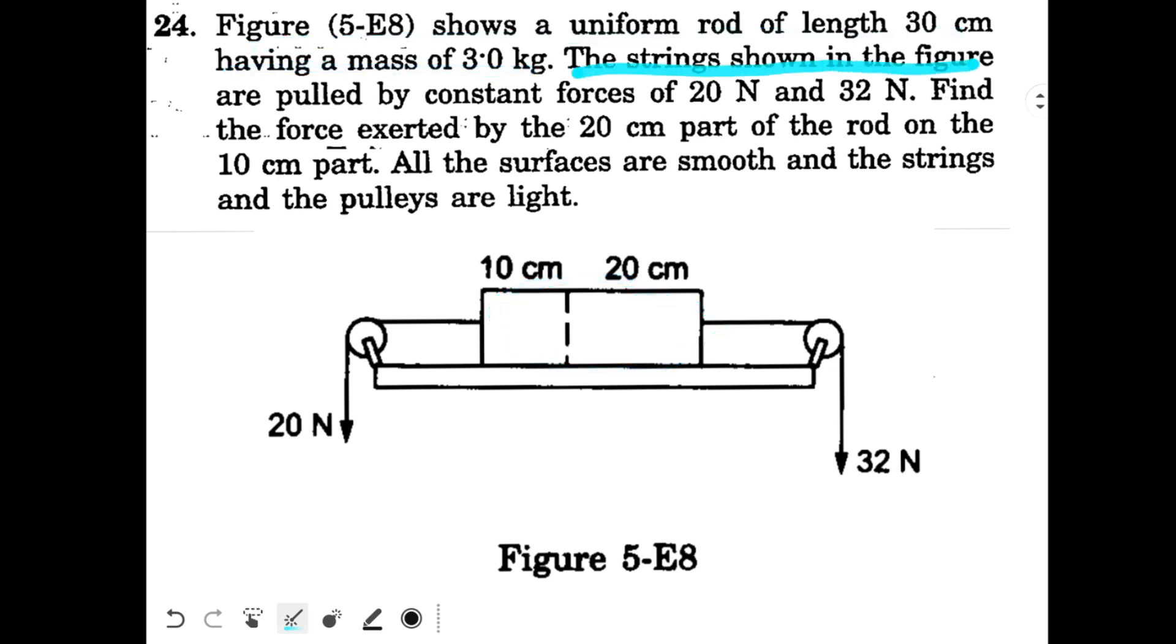The strings shown in the figure are pulled by constant forces of 20 N and 32 N. This is one string pulling with 20 N and this is the other string pulling with 32 N. Find the force exerted by the 20 cm part of the rod on the 10 cm part. All the surfaces are smooth and the strings and pulleys are light. We have to find the force exerted by this section on this section. That is the tension at this section of the rod.